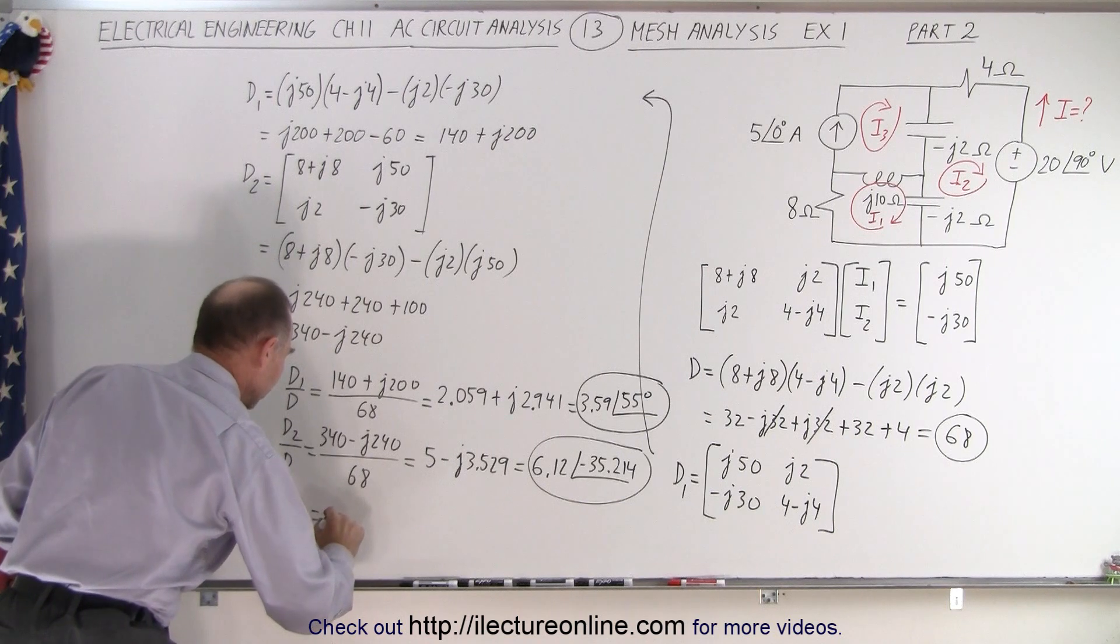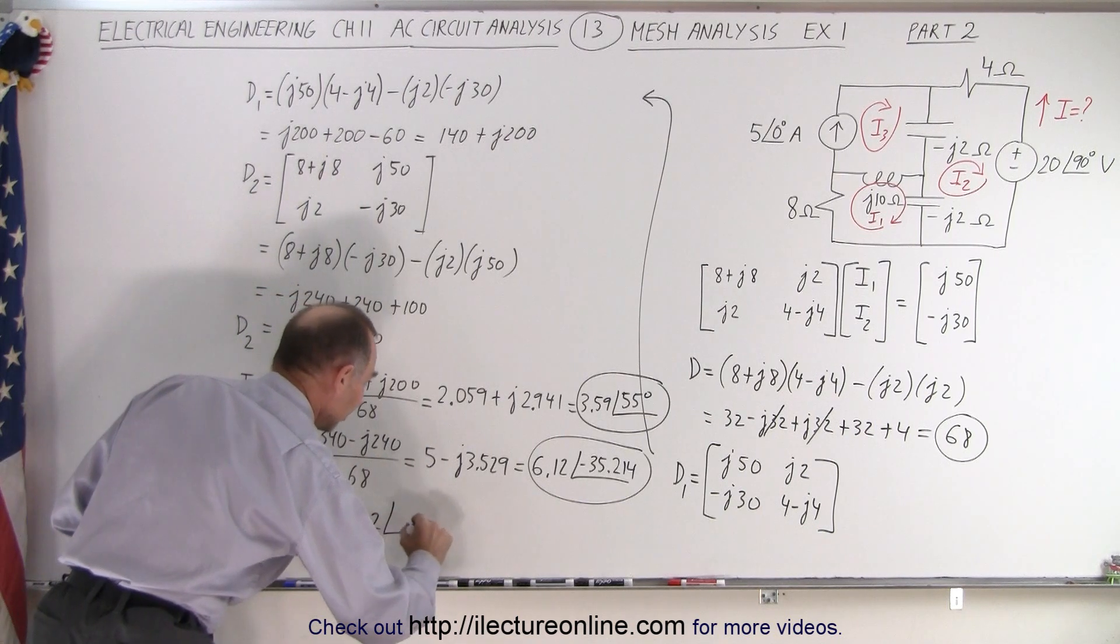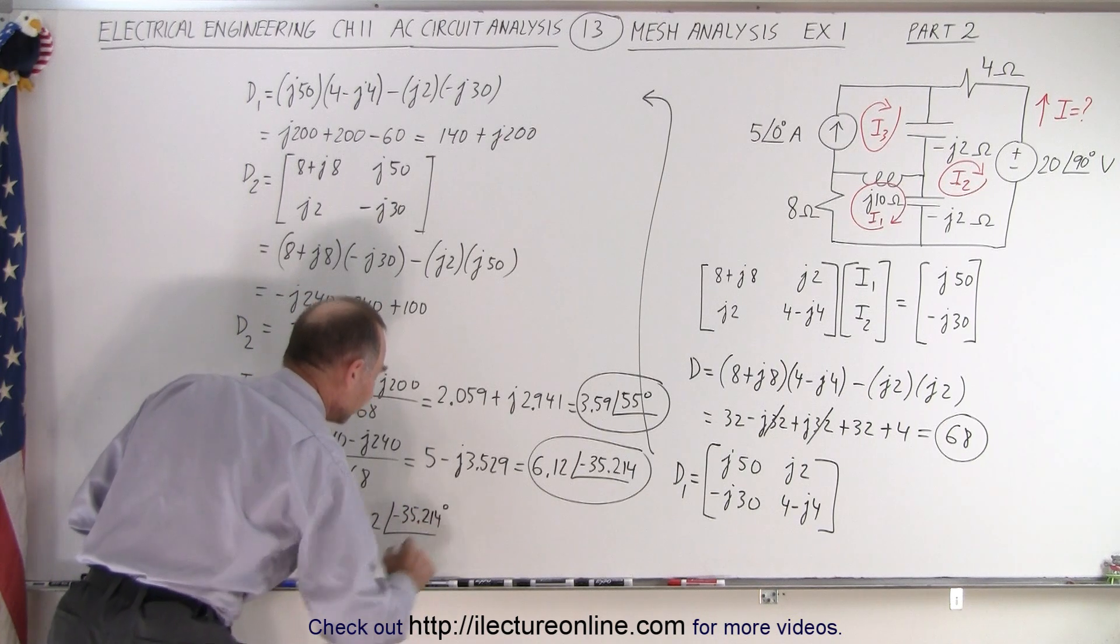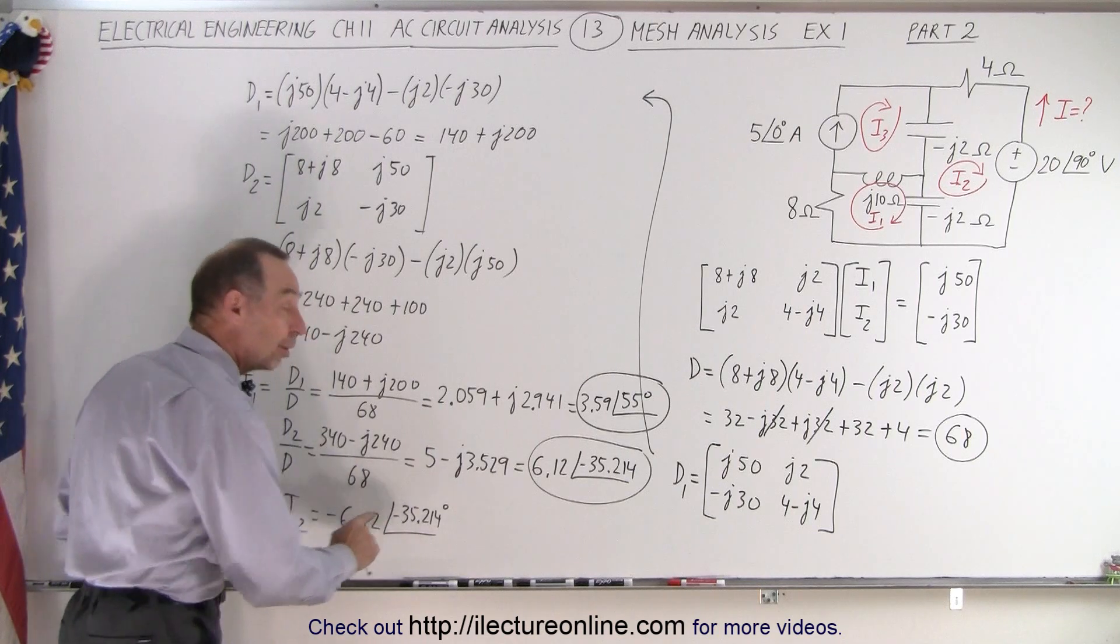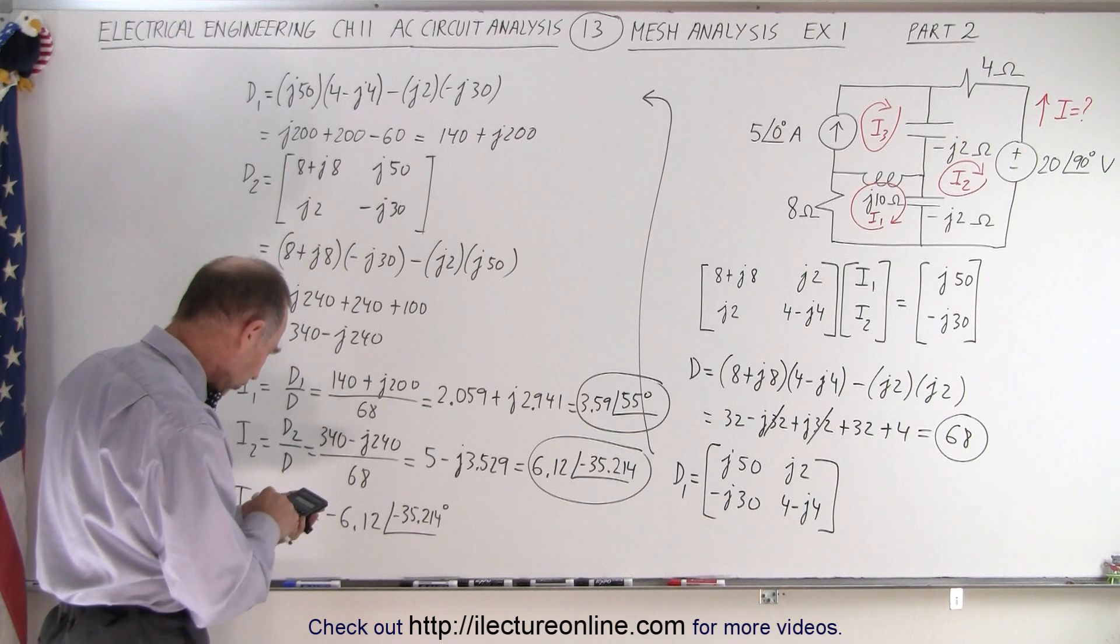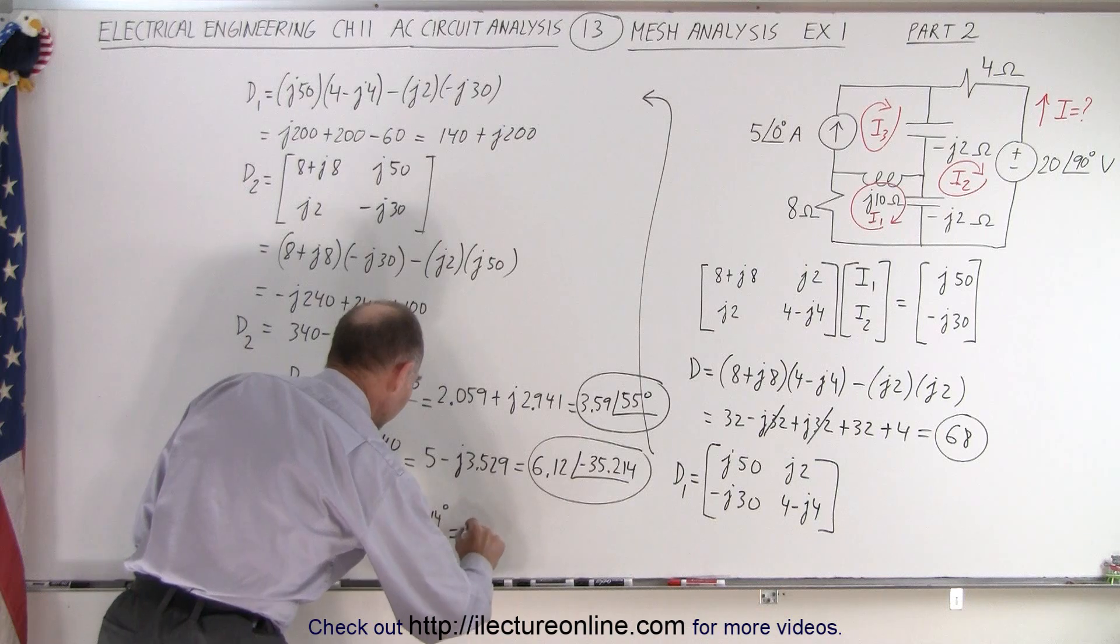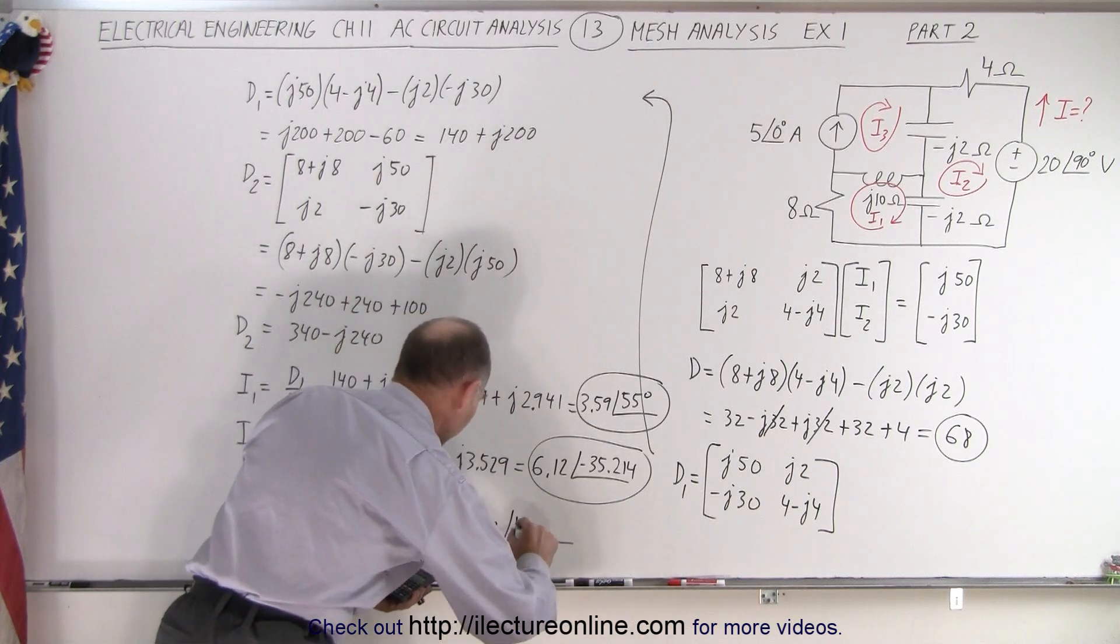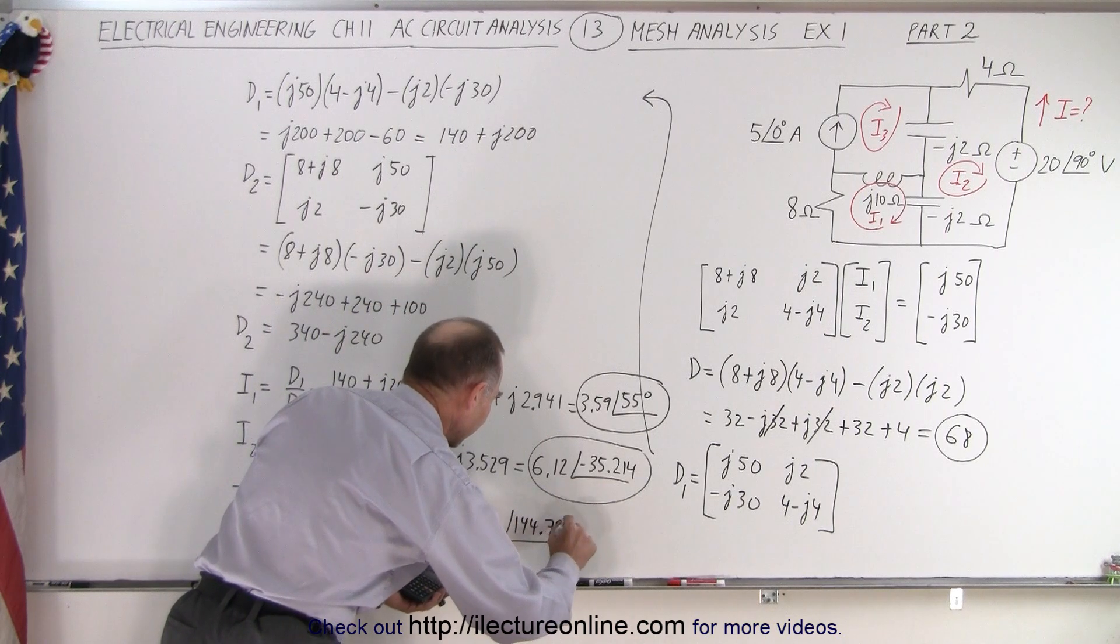Well, that means that this is equal to negative 6.12 with a phase angle of minus 35.214 degrees. Or, we can take this negative and add 180 degrees to that. So we take the minus 35 plus 180, that puts us at equal to 6.12 with a phase angle of a positive 144.79 degrees.